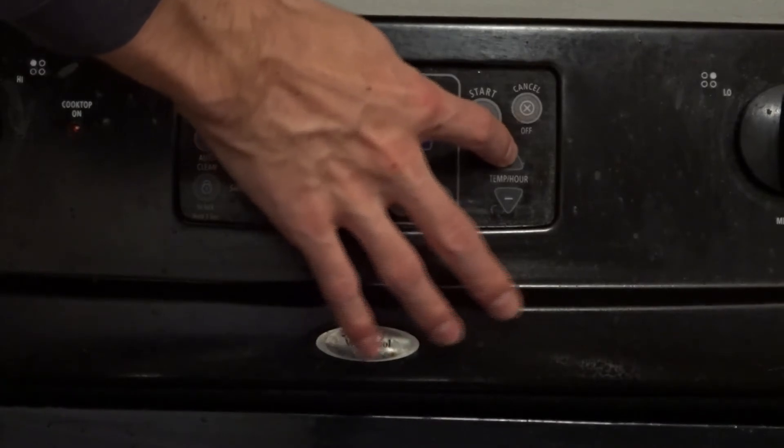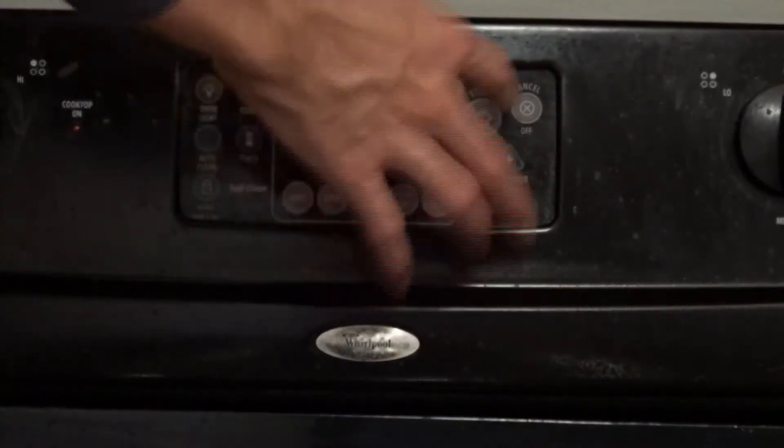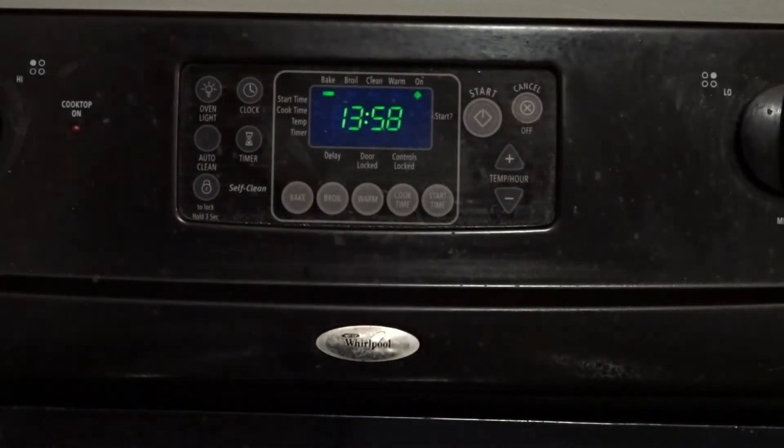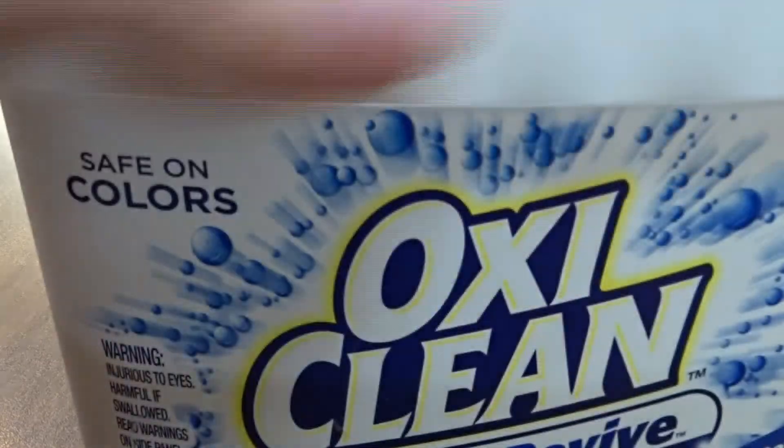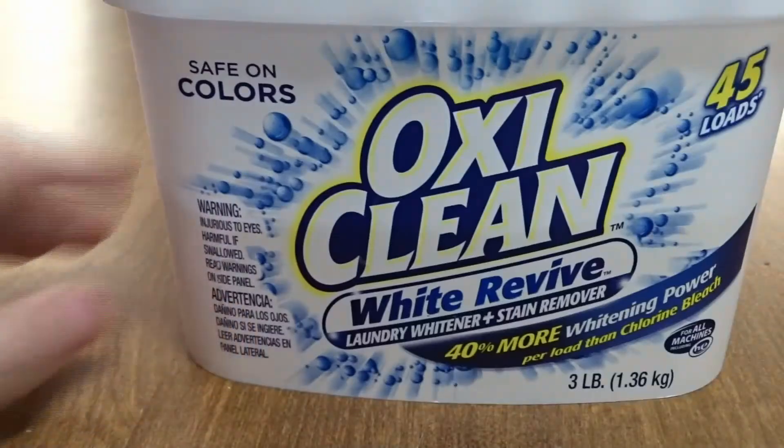Once the oven is at temp, let the glass cook for at least three hours. When the time is up, turn off the oven and let it come back down to room temperature. Once cool enough to handle, remove the containers and fill them about a third of the way up with OxyClean. Let me explain.